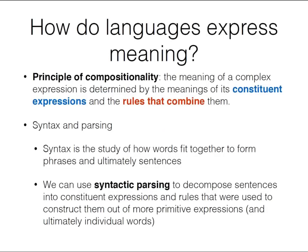Here is a linguistic approach to building a sentence representation, starting from the principle of compositionality — usually ascribed to Gottlob Frege, a philosopher of language at the end of the 19th century. It says the meaning of a complex expression is determined by the meanings of its sub-expressions and the rules combining them. Think about arithmetic expressions: we know the meaning of each operation and each number, and by looking at how they fit together we can evaluate the full value.